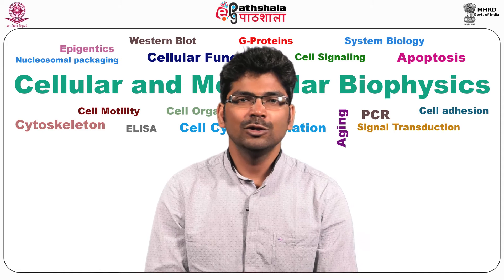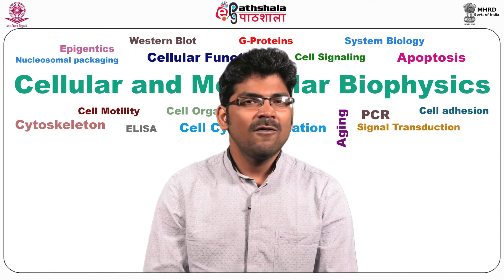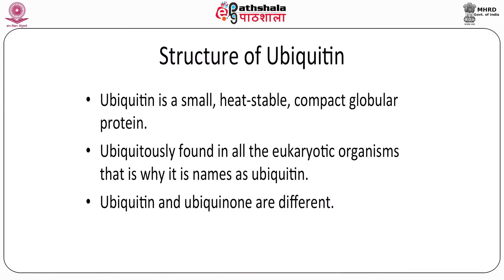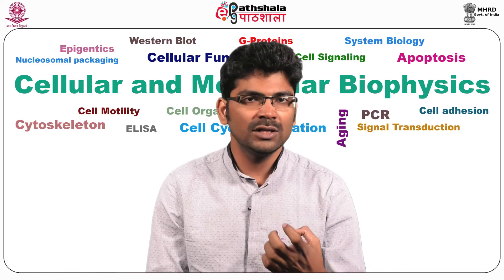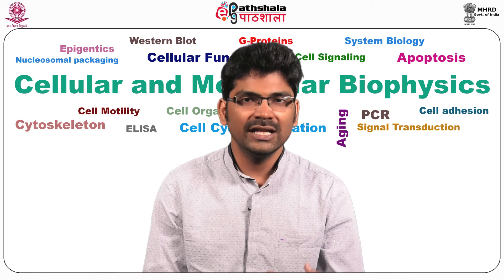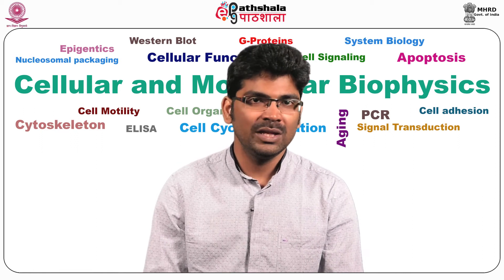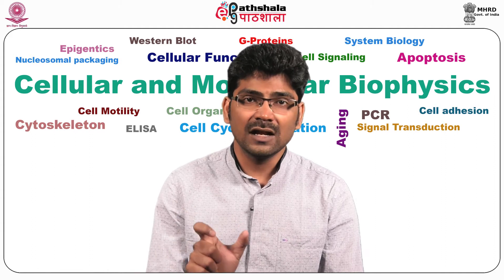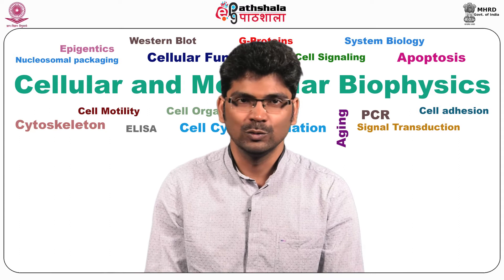What is Ubiquitin? Ubiquitin is a small, heat-stable, compact, globular protein. It is named Ubiquitin because it is ubiquitously found in all eukaryotic organisms. Note the difference between Ubiquitin and Ubiquinone — Ubiquitin is a protein, while Ubiquinone is a lipid; it is an isoprenoid derivative with 10 isoprene chains, also known as Q10 or Coenzyme Q.